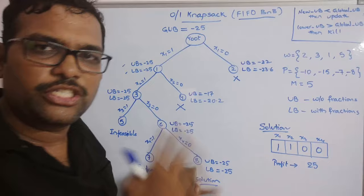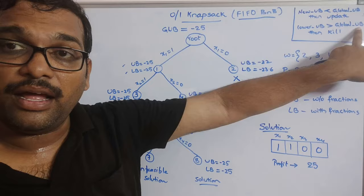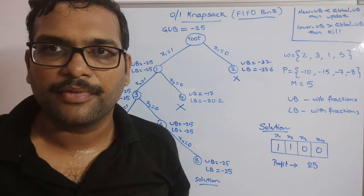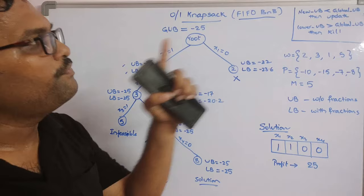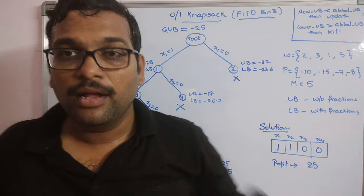These two conditions are most important: after calculating the upper bound and lower bound for every node, we check both cases so that the complete state space tree does not need to be fully calculated - some nodes are discarded, reducing the state space tree. This is the zero-one knapsack problem using FIFO branch and bound. Hope you enjoyed the session - please like, share, and subscribe to our channel. Thank you very much.